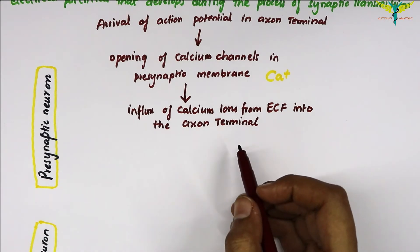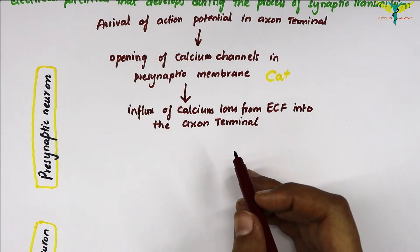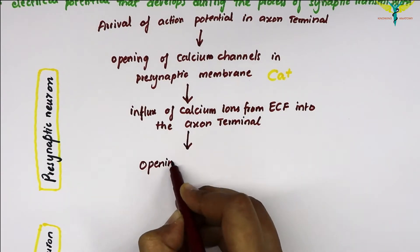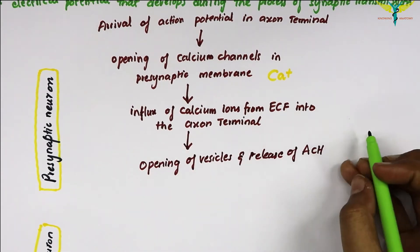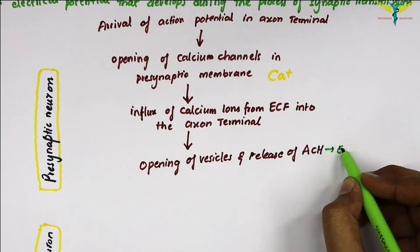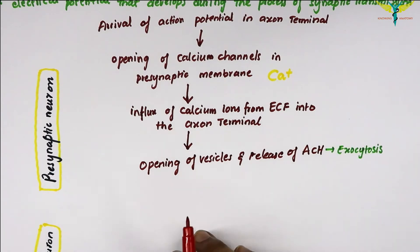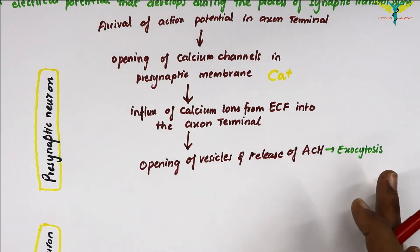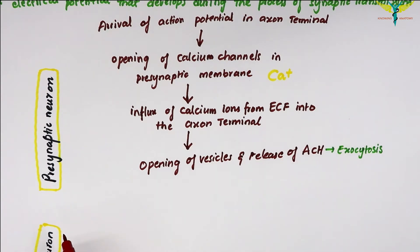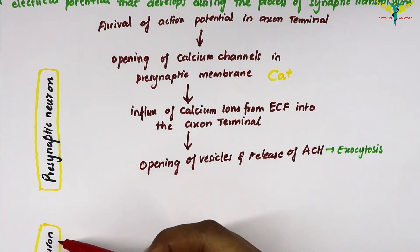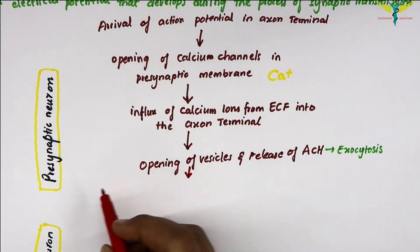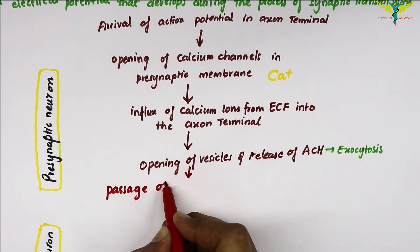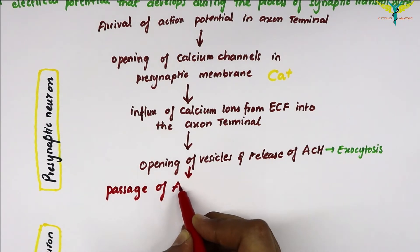The calcium ions enter the axon terminal from the ECF. The calcium ions cause the release of the neurotransmitter — that is, acetylcholine — from the vesicles by means of the process of exocytosis. The excitatory neurotransmitter then passes through the pre-synaptic membrane and the synaptic cleft, and it reaches the post-synaptic membrane.